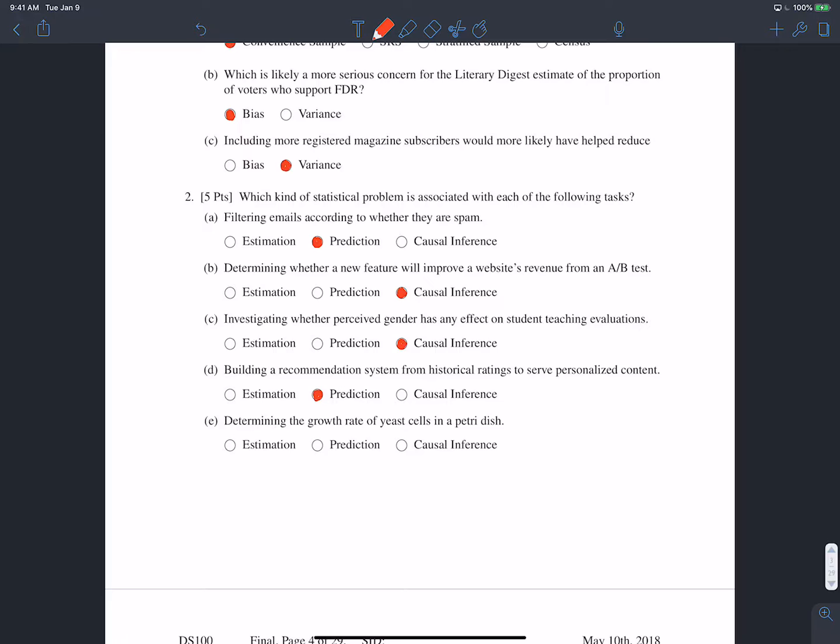And lastly, determining the growth rate of yeast cells in a Petri dish. That's estimation. Here we have a sample of yeast cells, and we're trying to estimate some parameter, and in this case, it's the growth rate. So that's not exactly prediction. We're not trying to build a model to predict values for unseen data. We're just trying to estimate some parameter of the data that we already have. So we'd say that that is estimation.